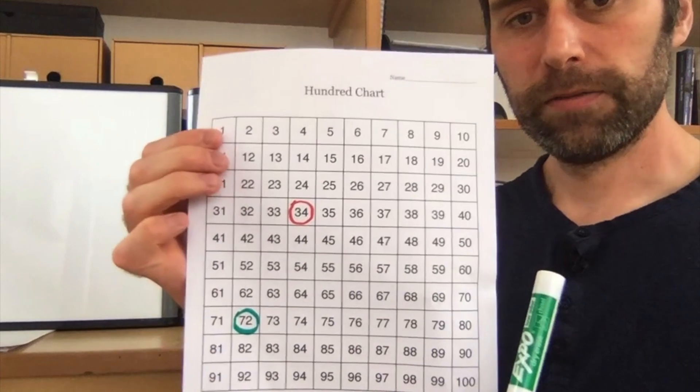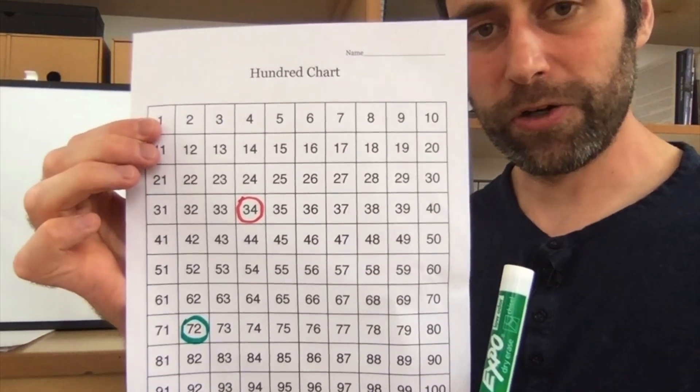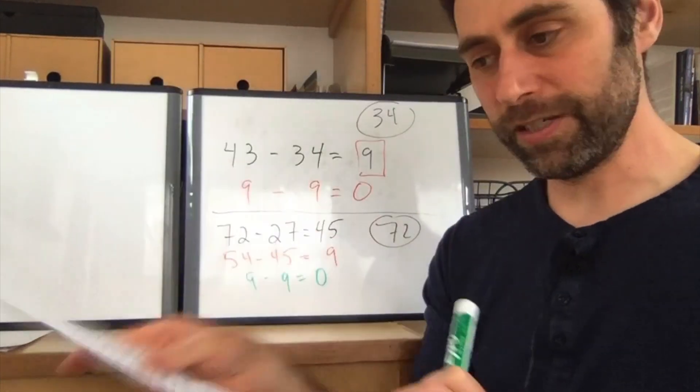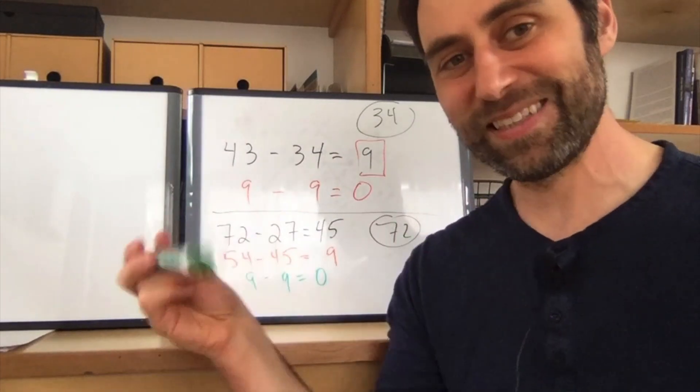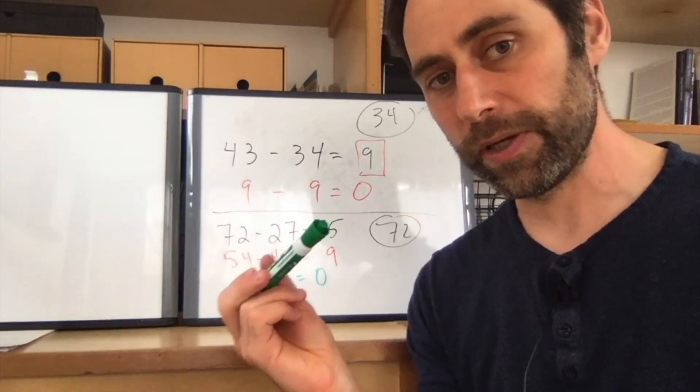So if you just color coordinate your 100 chart, you can keep track of the data and keep track of this information of how many steps it took you to get to 0 each time.